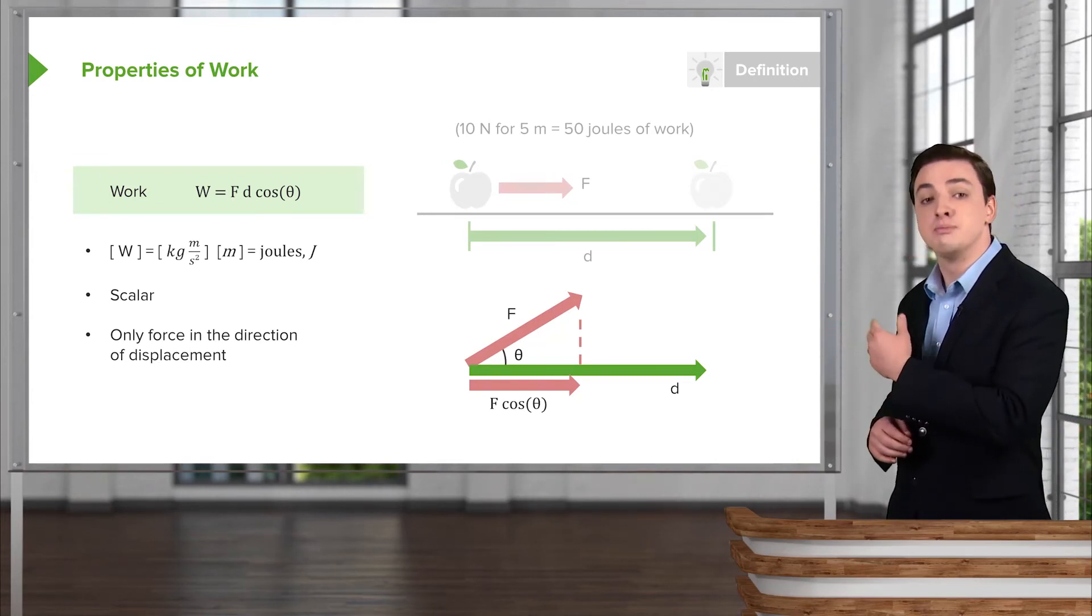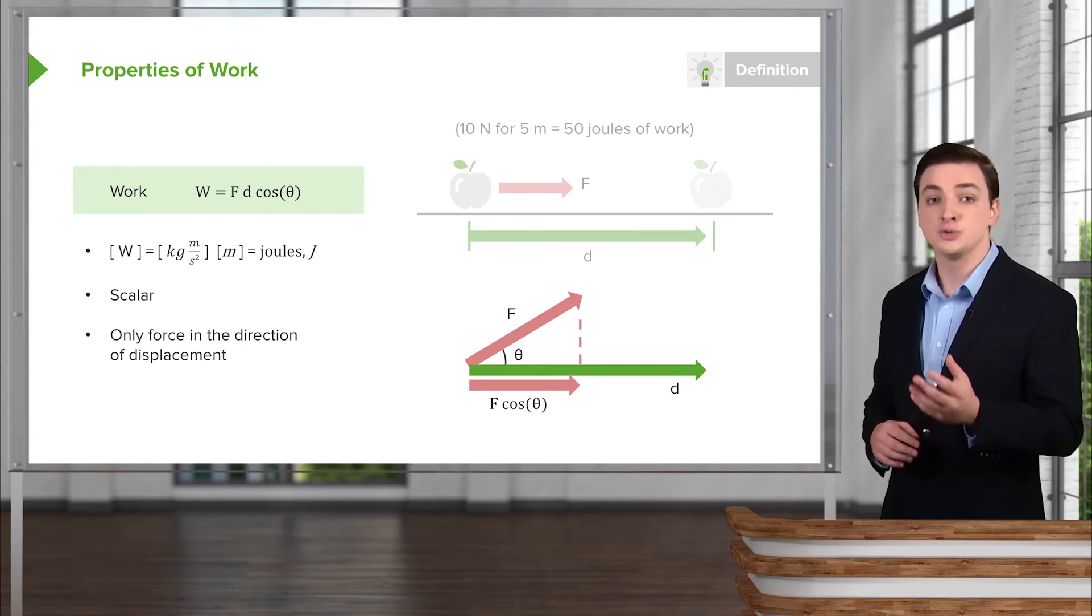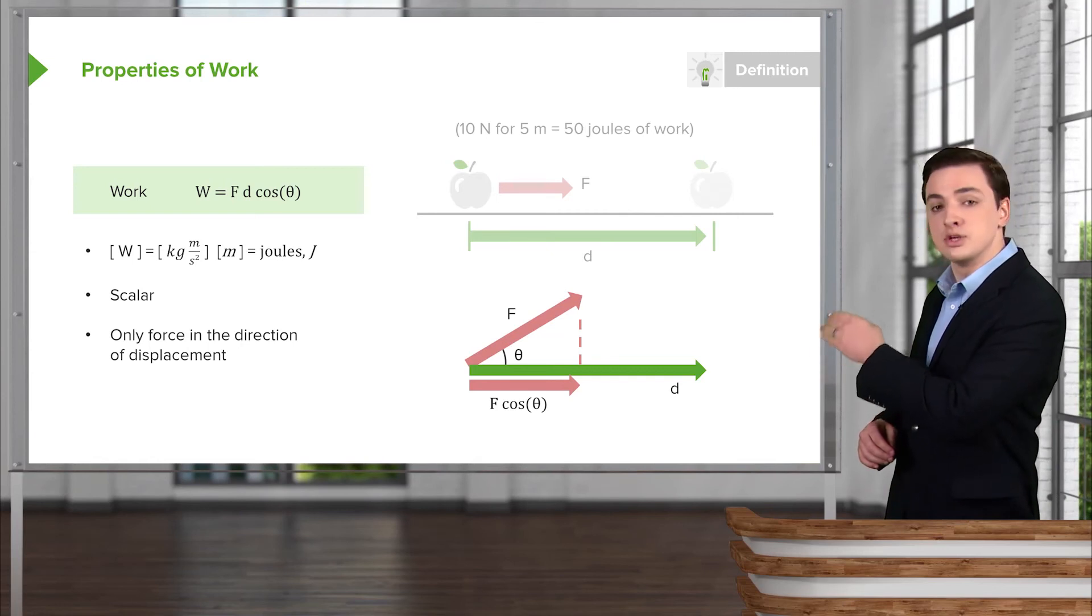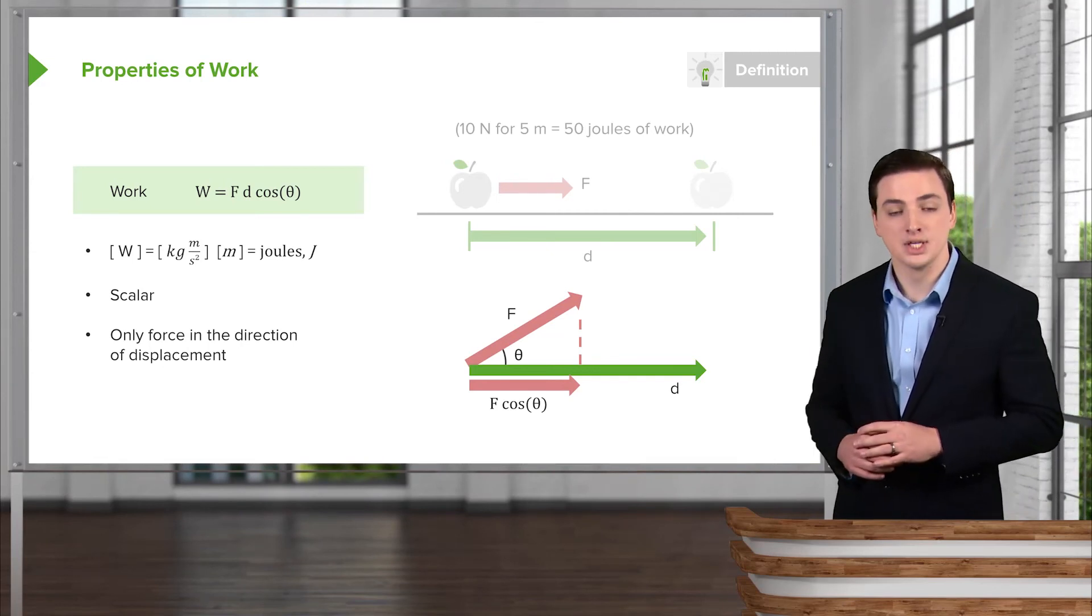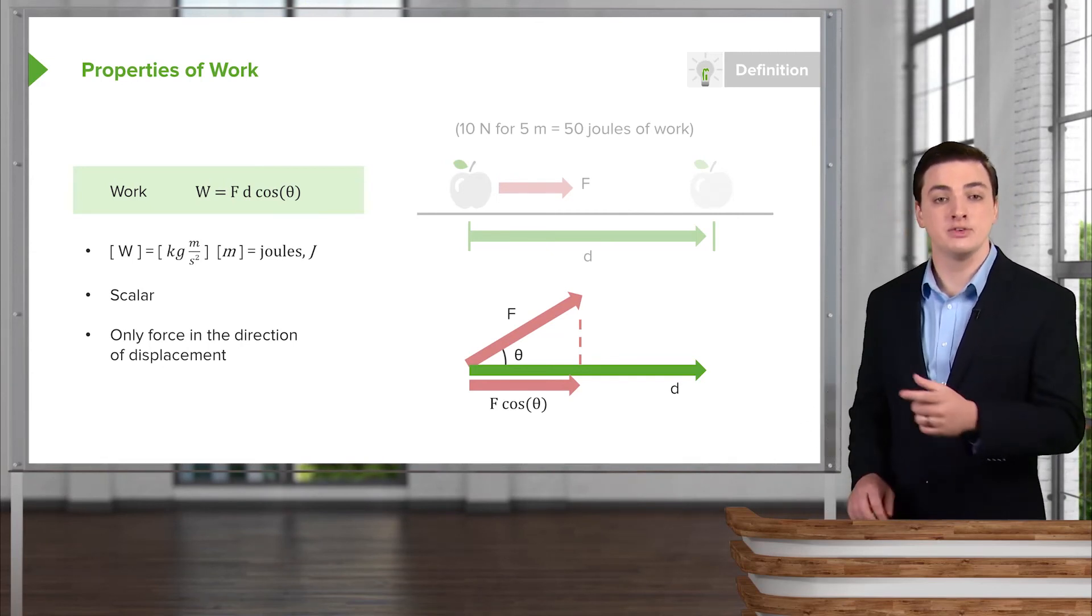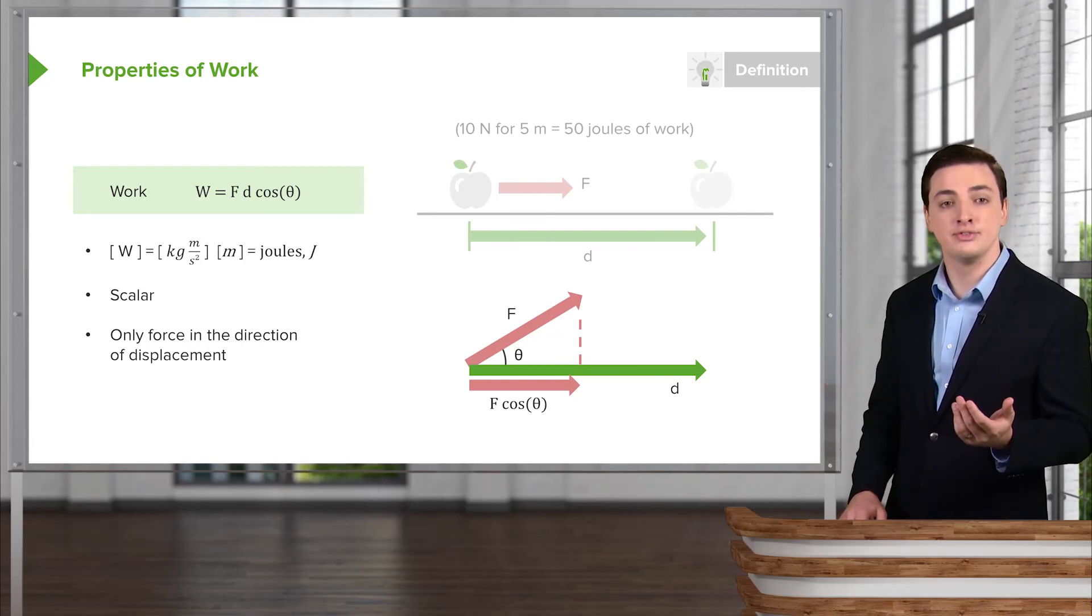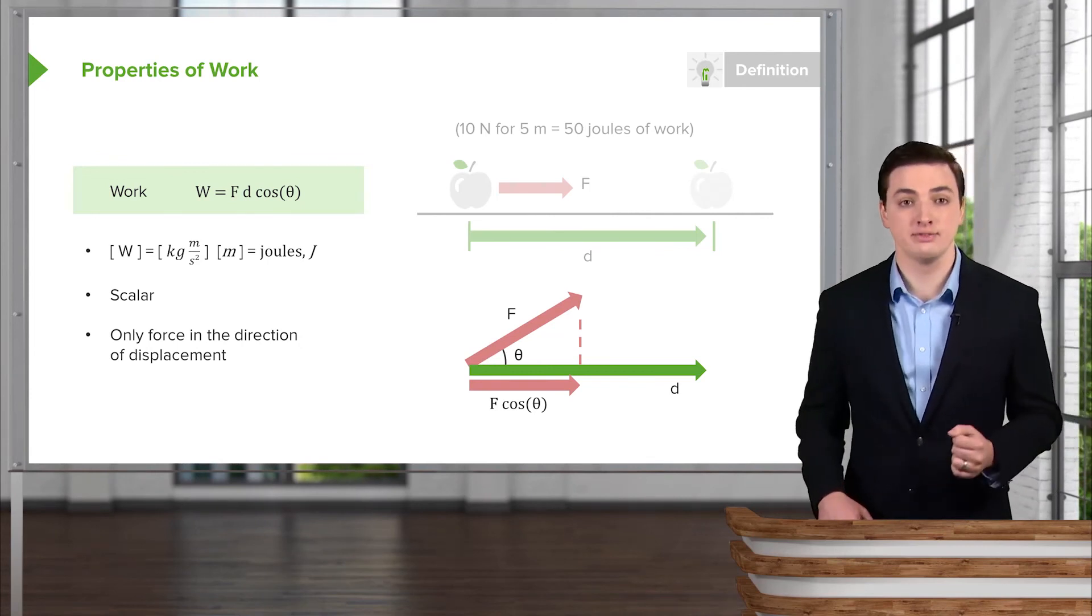But for whatever reason that this force is at an angle to the direction of motion, we can find the force component in the direction of motion just by considering a triangle. So if you look at the triangle that we formed here with the force and the direction of motion, and we have an angle theta, we can find the horizontal component of the force by taking the magnitude of the force and multiplying by cosine of theta.